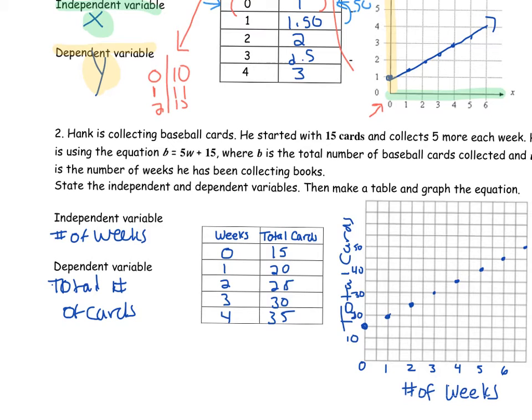So for this one, we have to figure out our dependent and our independent. Well here, if he is collecting baseball cards and he collects 5 each week, that means the total amount he has depends on the weeks. So our weeks will go in our first column. That's always the independent variable. Notice I didn't just put a W. I'm putting number of weeks. I'm saying what it means. And that is going to be on your x-axis.